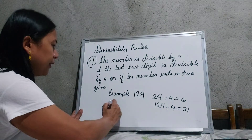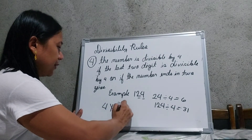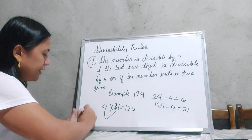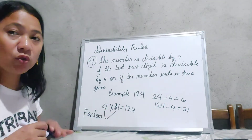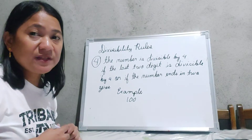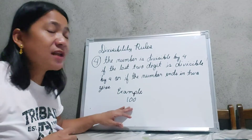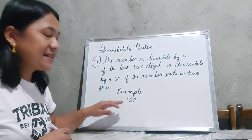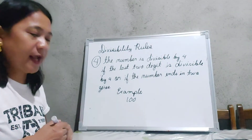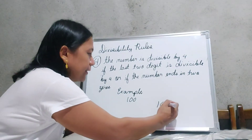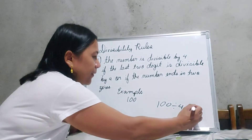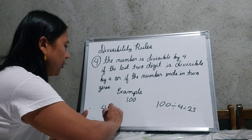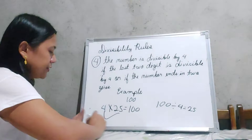Because when we multiply 4 and 31, we get the product 124. Another number divisible by 4 is 100. Since 100 ends in 2 zeros, it is automatically divisible by 4. When we divide 100 by 4, we get 25. So 4 and 25, when multiplied together, give us 100. Therefore, 4 and 25 are the factors of 100.